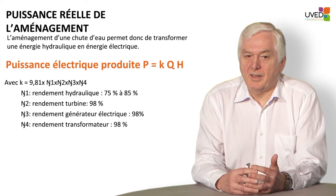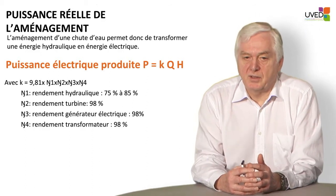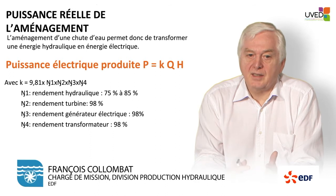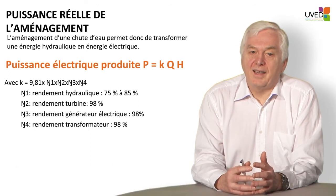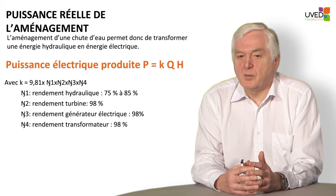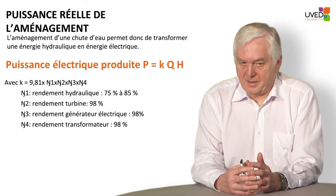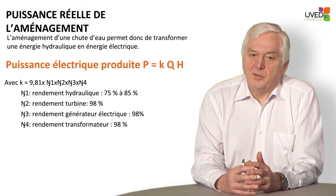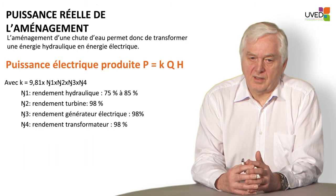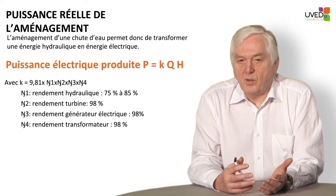When water reaches the turbine, the hydraulic power is turned into mechanical power, and yield is quite high — up to 98% turbine yield nowadays. The mechanical power then drives an electric generator, producing electrical power, also at 98% yield. Most of the time, the voltage generated by the alternators is relatively low, and before we can inject it into the grid, we need to increase it with an electrical transformer. Transformers also have a very high yield of 98%.